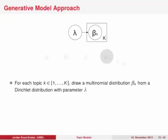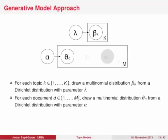Now that we've talked about multinomials and Dirichlets, we have enough information to talk about the model's assumptions. Topic models assume that each topic is a distribution over words — this distribution comes from a multinomial beta_k, which is itself drawn from a Dirichlet with parameter lambda. Each document is a distribution over topics, which comes from a Dirichlet with parameter alpha. Beta_k corresponds to the topics we observe — the technology topic, the business topic, the arts topic. Theta corresponds to the position of documents in the triangle.